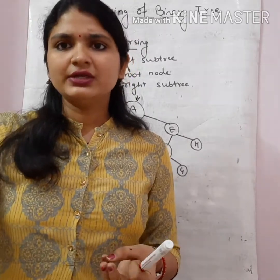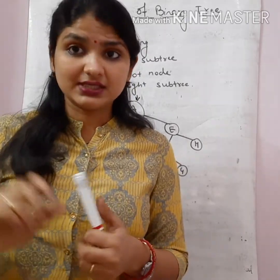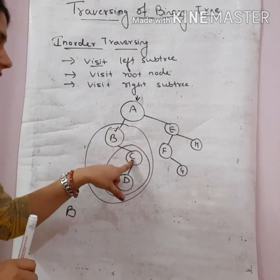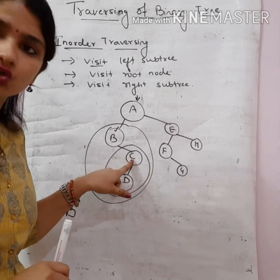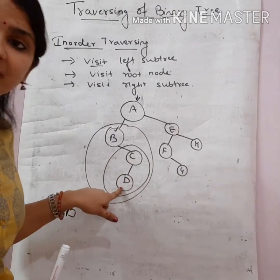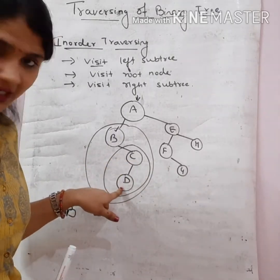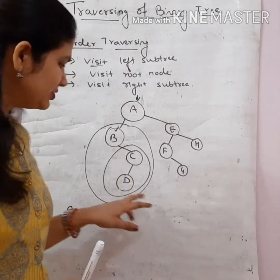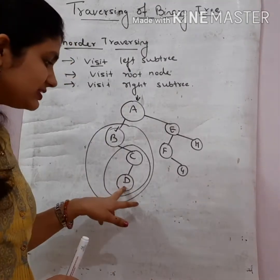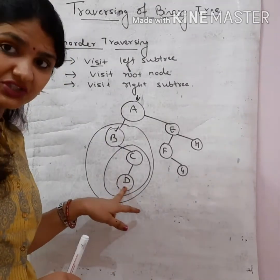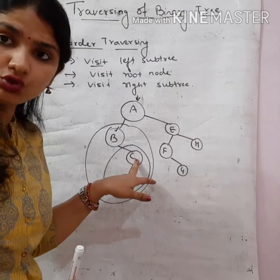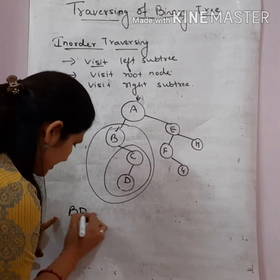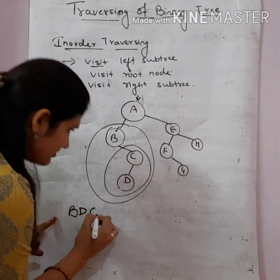Then we go to the right subtree. In case of the right subtree, the same logic applies: first visit left, then visit the root, and finally visit the right subtree. So in this case, C is the root node and D is its left subtree. We visit the left subtree first, so we visit D, then we visit C.